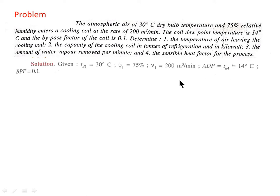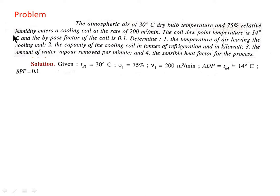Based on the above question we can write down the given conditions: dry bulb temperature Td1 = 30°C, Φ1 = 75%, as the atmospheric air at 30°C DBT and 75% relative humidity is entering into the cooling coil at a rate of 200 m³/min.